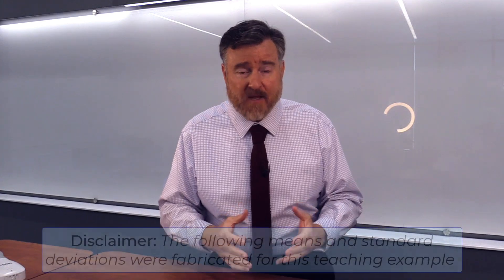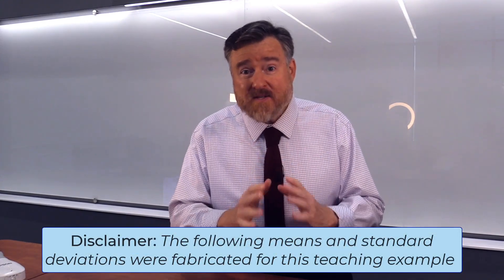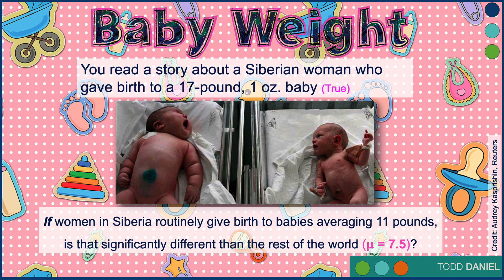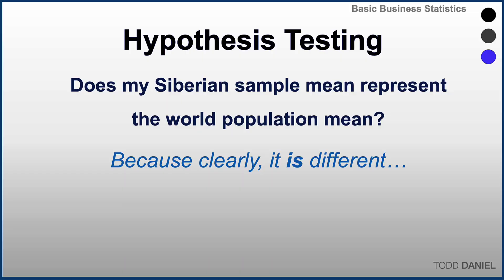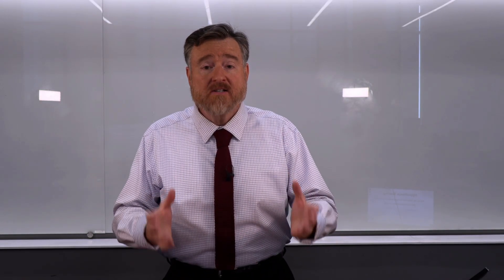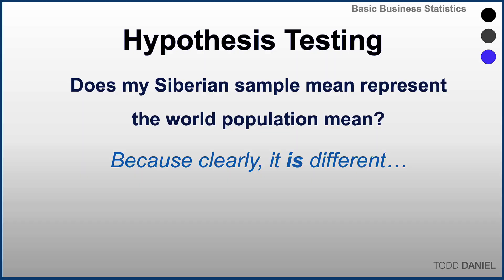Regardless, we get really interested in the story and we start doing some exploration. And here's what we find — and by the way, at this point I'm making things up. We discover that in Siberia women routinely give birth to babies averaging 11 pounds. However, we know from the World Health Organization that the world population average is 7.5 pounds. Is that Siberian sample mean — because remember, Siberia is part of the world population — significantly different than the rest of the world? We will use hypothesis testing to answer whether that Siberian sample mean represents the world population mean.